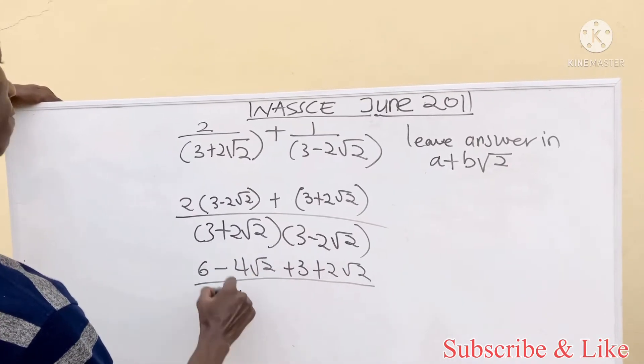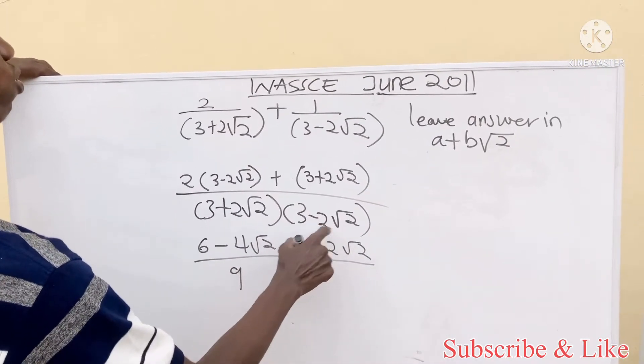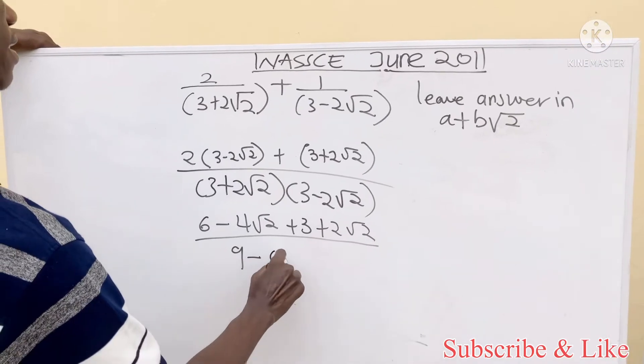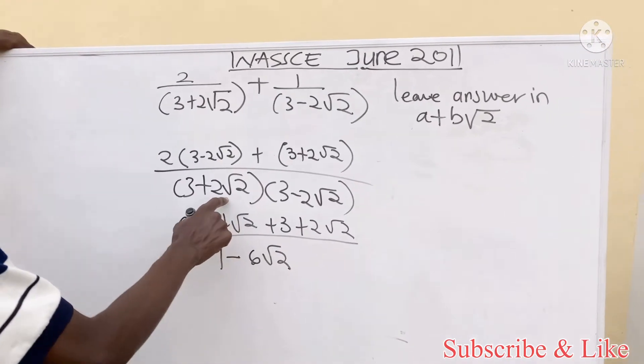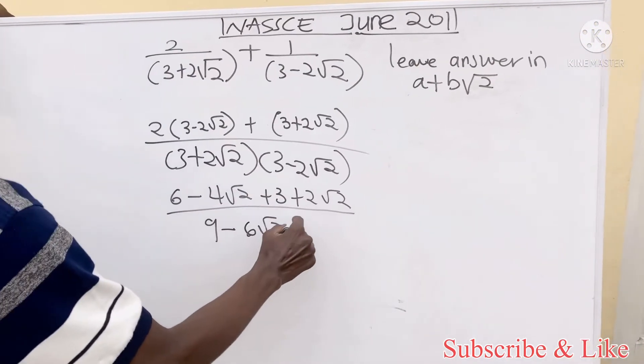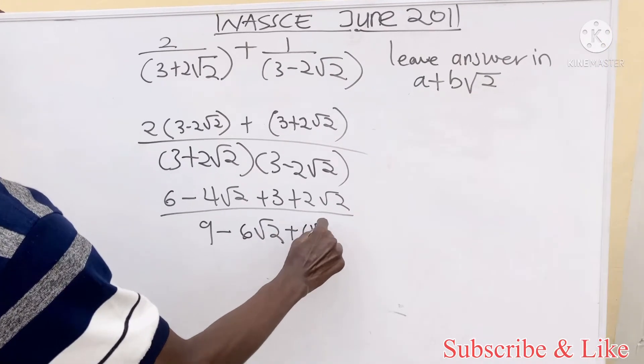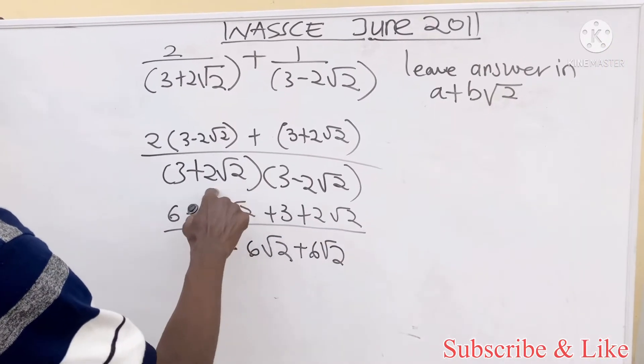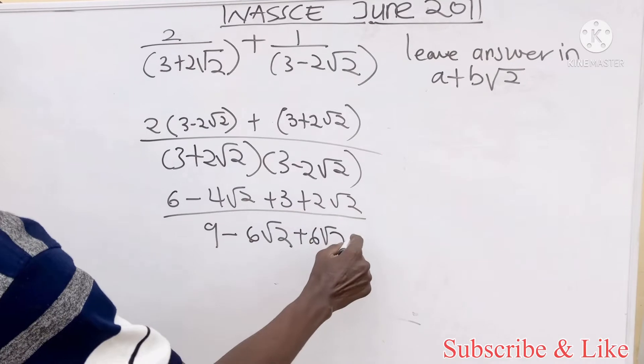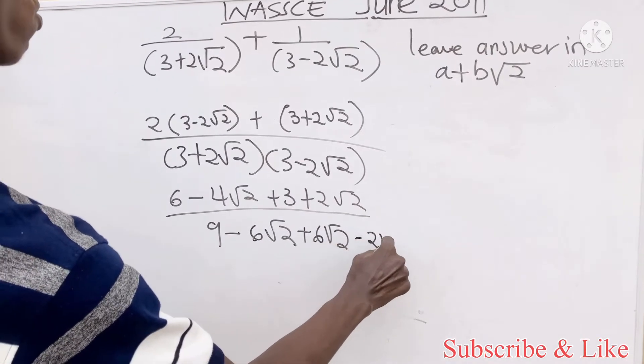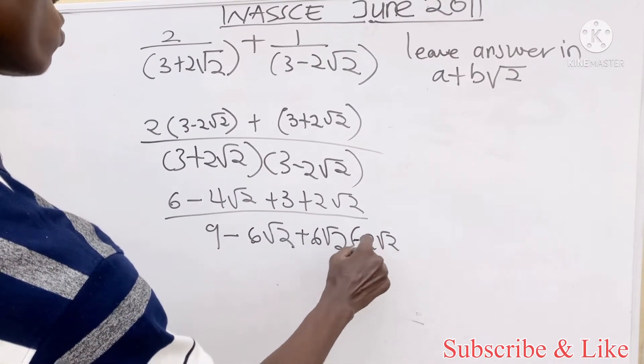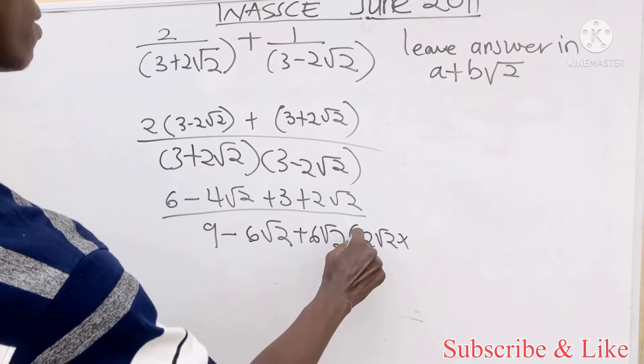When we expand by three times three, we get nine. Three times root two gives us six root two. Two times three gives us six root two. Three times root two times two gives us six root two.